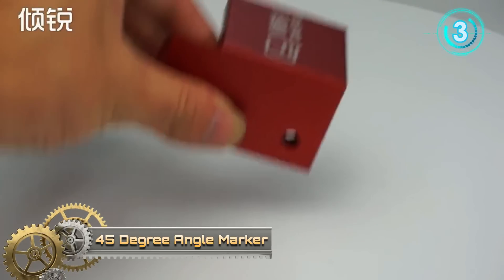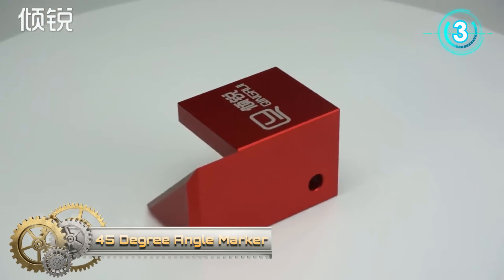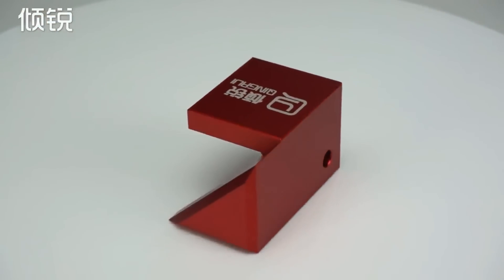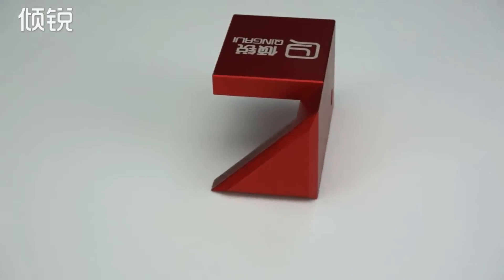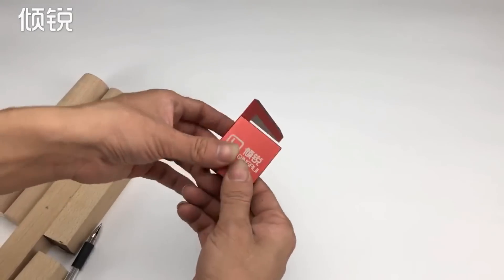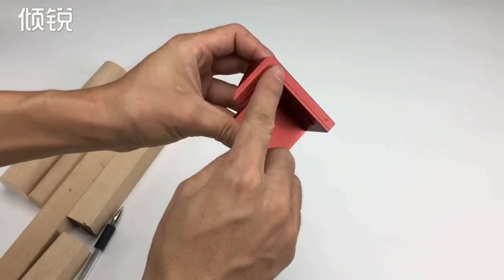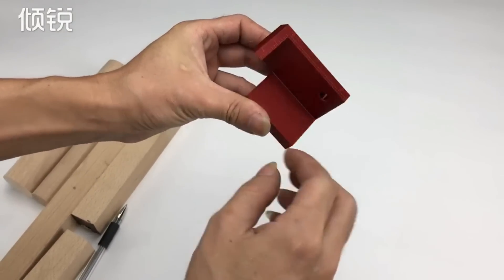45-degree angle marker. This pen blank center finder is designed to draw 45-degree lines on small-sized material, such as cuboids, cubes, cylinders, rectangular, square, or round timber.